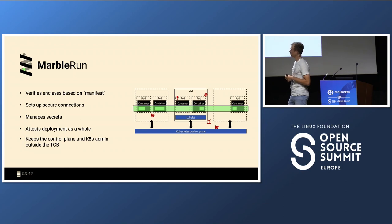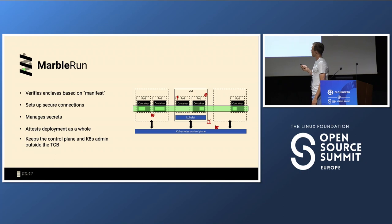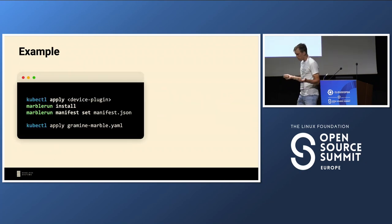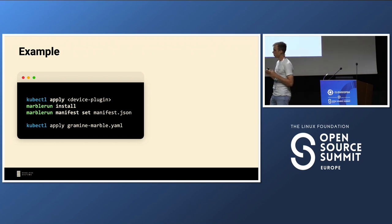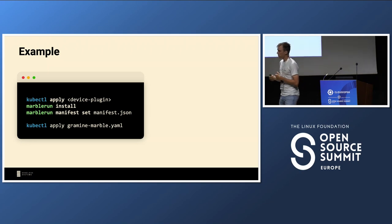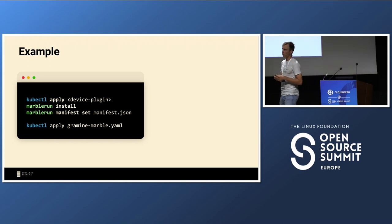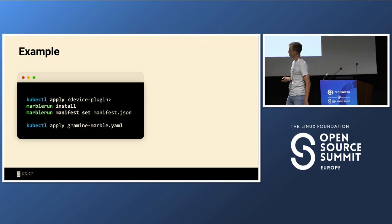Marblerun is probably the most prominent open source solution in this space. The deployment workflow is: create a Kubernetes cluster with SGX-capable nodes, install the device plugin, install Marblerun, apply your application with the added annotations, and the scheduler places pods on the right nodes.